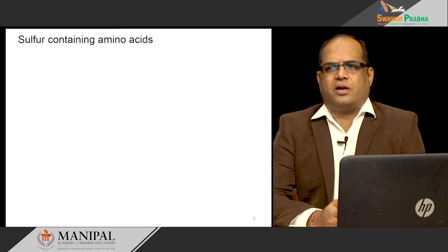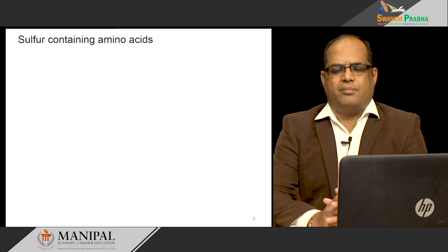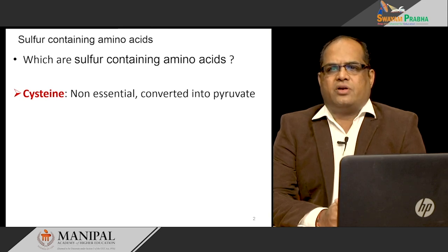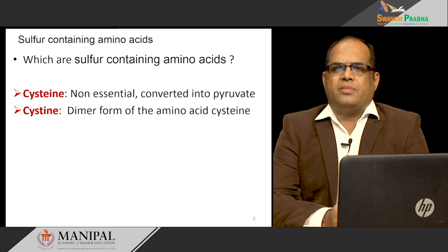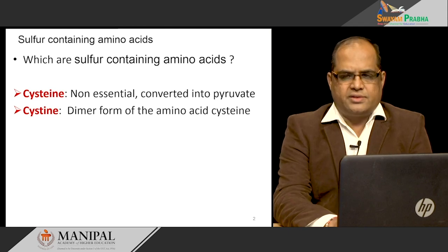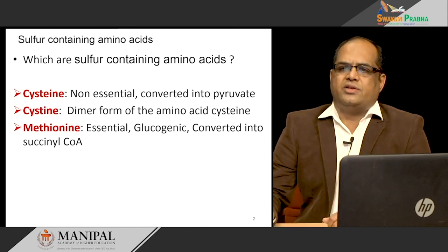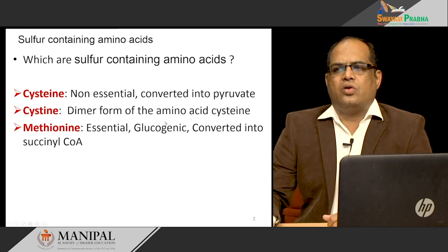First, we should know what are sulfur-containing amino acids. Out of 20 amino acids, 3 amino acids are sulfur-containing amino acids. Those are cysteine, cystine, and methionine. Cysteine is a non-essential amino acid because you can synthesize it in your body, and cysteine can be converted into pyruvate. Our body cannot synthesize methionine, and methionine is glucogenic in nature.